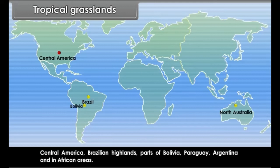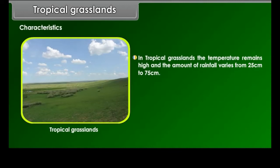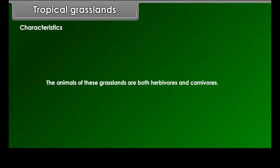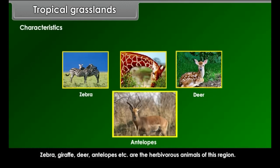Characteristics of tropical grasslands: The temperature remains high and rainfall varies from 25 cm to 75 cm. Tall and thick grass grows here with scattered trees. Cattle rearing is carried out on these grasslands. The animals are both herbivores and carnivores. Zebra, giraffe, deer and antelopes are the herbivorous animals; carnivores include lions, leopards, panthers, hyena and jackal.